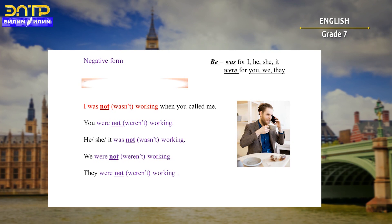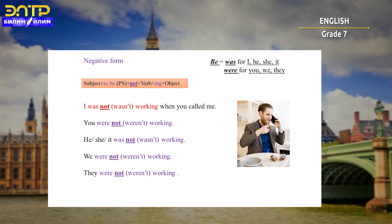Here is the formula for building a negative sentence: Subject + to be in past simple + not + verb with ING ending + object.